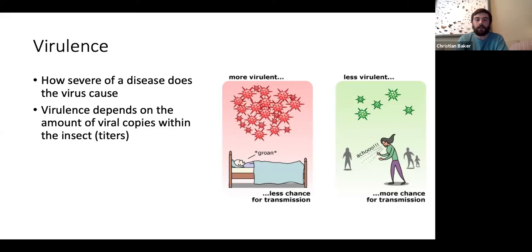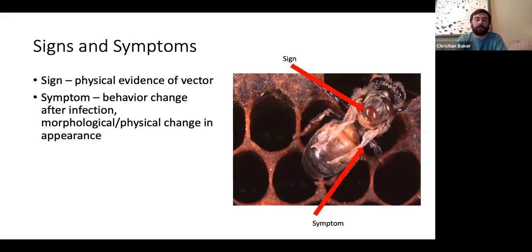There are also signs and symptoms of diseases. A sign is physical evidence of infection, while a symptom would be a behavioral, morphological, or physical change in appearance. Here we see a honeybee with two mites on it, along with deformed wings. The mites are the signs of infection and the deformed wings are the symptom of infection.